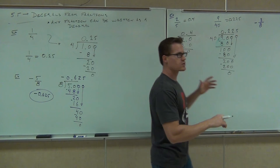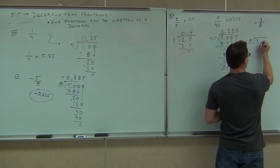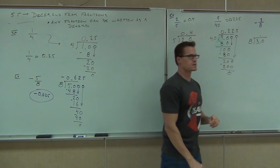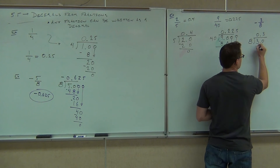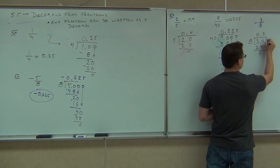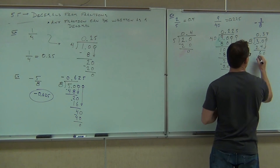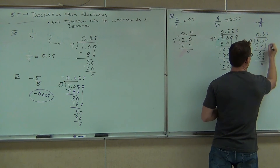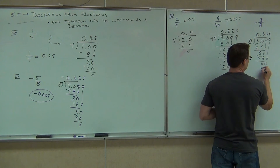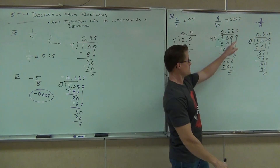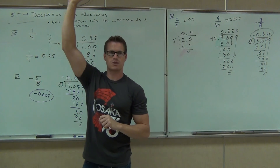Next up, negative three-eighths. Of course our answer is going to be negative, so we should have negative something. We'll put 8 on the outside and 3 on the inside of our division symbol with a decimal and a zero. 8 doesn't go into 3, so I'll put a zero up there. 8 does go into 30 three times — I get 24. When I subtract, I get 6. I bring down another zero. 8 goes into 60 — I'm thinking 7 times. Bring down one more zero. 8 goes into 40 — that's 5 times. We did have a negative here, so the answer is negative 0.375.